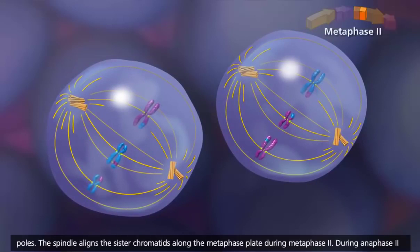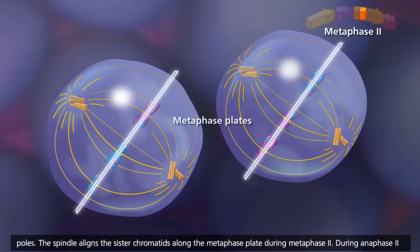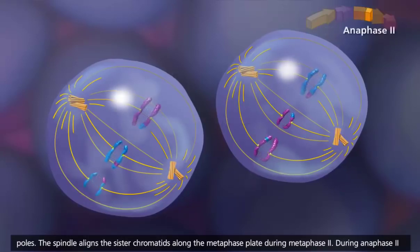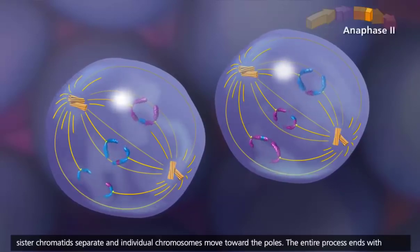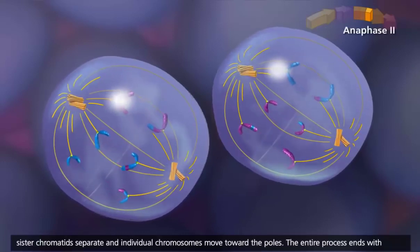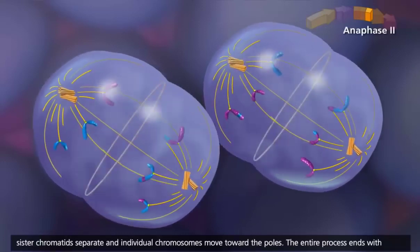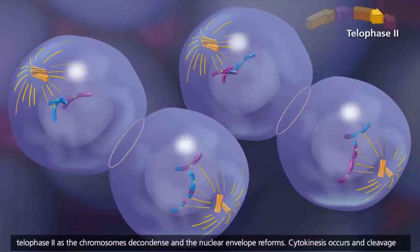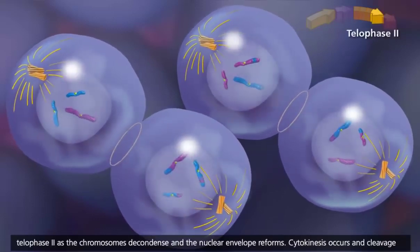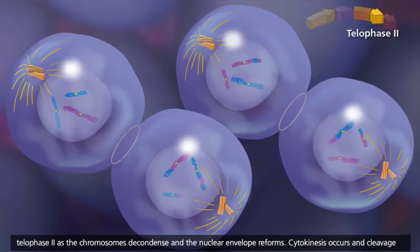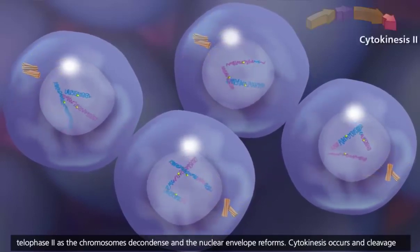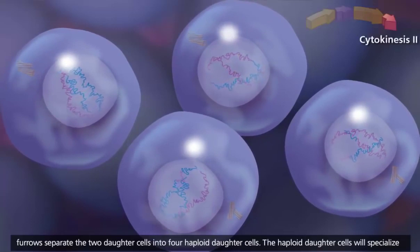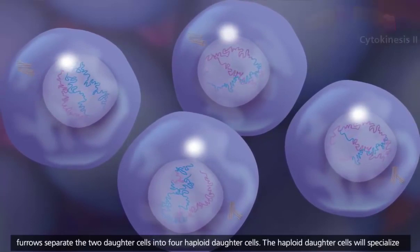The spindle aligns the sister chromatids along the metaphase plate during metaphase II. During anaphase II, sister chromatids separate and individual chromosomes move toward the poles. The entire process ends with telophase II, as the chromosomes decondense and the nuclear envelope reforms. Cytokinesis occurs and cleavage furrows separate the two daughter cells into four haploid daughter cells.